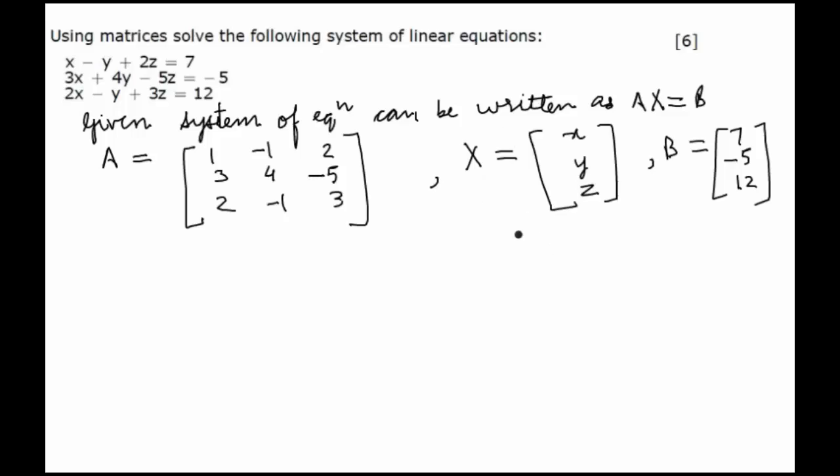First of all we see if A is singular or non-singular. We find out |A|, which equals 1 into (4 times 3, that's 12 minus minus 5) plus 1 into (9 plus 10) plus 2 into (minus 3 minus 8).